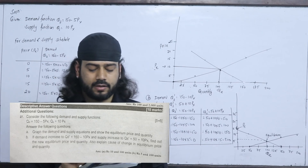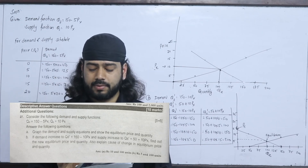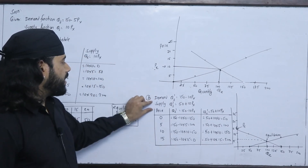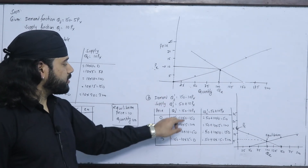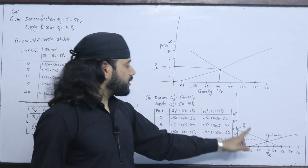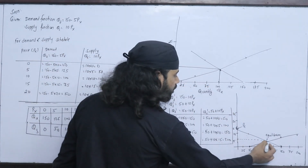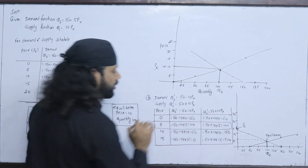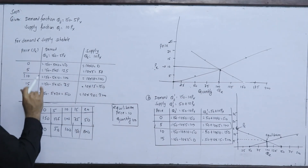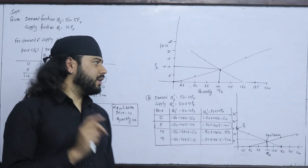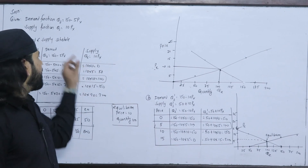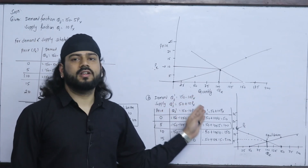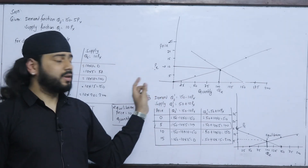Now the second part: demand increases to QD' = 150 - 10PX and supply increases to QS' = 50 + 10PX. Find the new equilibrium price and quantity and explain the cause of change. With the new functions, the new equilibrium price is P = 5 and new equilibrium quantity is Q = 100. You can verify this graphically or algebraically.